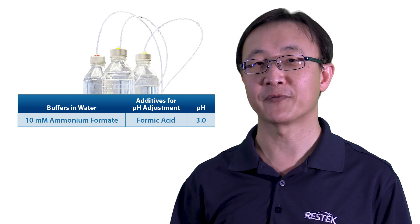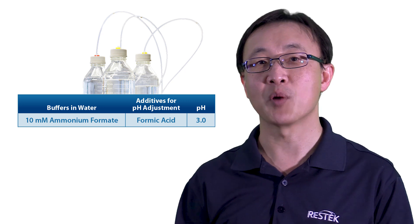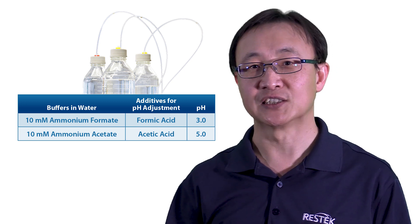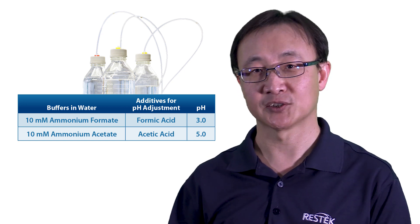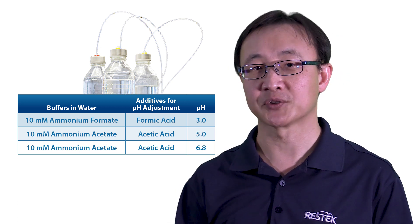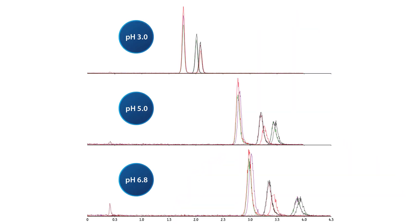For a phase starting point, we recommend preparing at least three aqueous mobile phases with different pH. The first one is 10-millimolar ammonium formate adjusted to pH 3 with formic acid solution. The second one is 10-millimolar ammonium acetate adjusted to pH 5 with acetic acid solution. And the third one is 10-millimolar ammonium acetate adjusted to pH 6.8 with acetic acid solution. By running isocratic or gradient elution starting with 90 or 95% acetonitrile, you should be able to tell which pH solution is better by just looking at the analyte peak shapes.